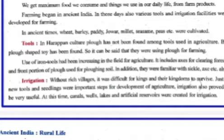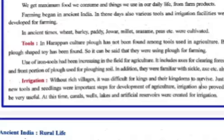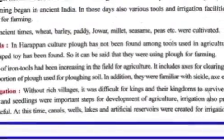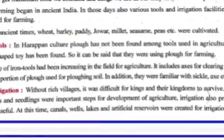Slowly, technology came into the farming process. In ancient times, crops such as wheat, barley, paddy, jowar, millet, sesame, and peas were cultivated. These were the basic crops they were growing in ancient times.